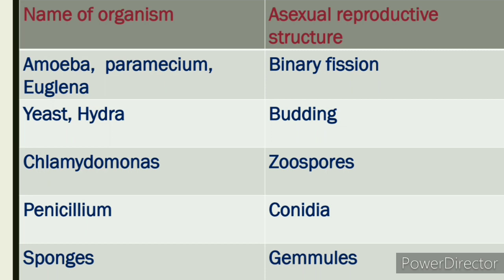Yeast and hydra reproduce by budding. Zoospores form in algae and fungi. Penicillium has conidia — formed on beads at the tip, like a pencil. Sponges form gemmules, which are endogenously formed reproductive structures. Okay, it is fine with the other hand.